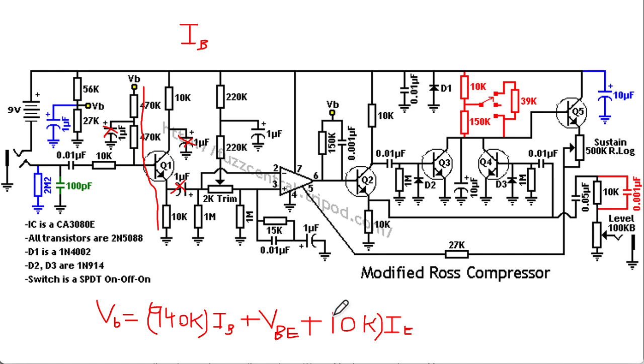And the base current, I could write that as the collector current divided by beta. IE is going to be the collector current divided by alpha. So I can substitute these things in, solve for IC, and then solve for IB. Or you can rearrange this equation in different ways.